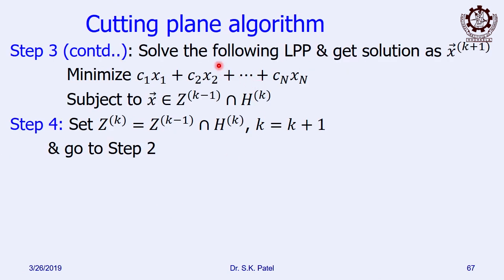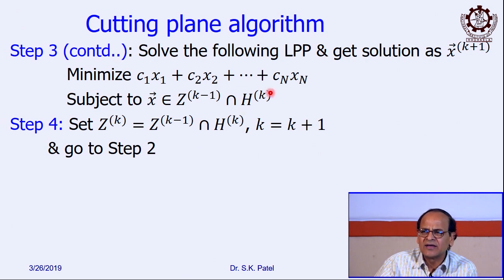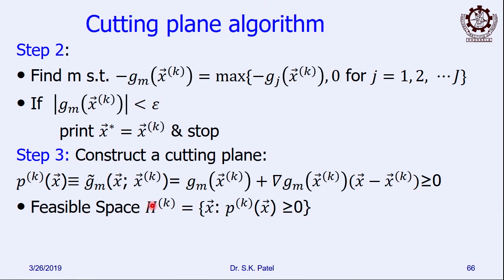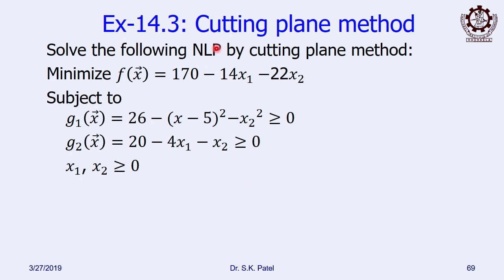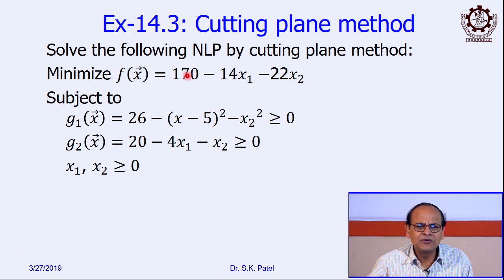In step 3, construct a cutting plane P. The cutting plane is: g_m(xk) + [del g_m(xk)]^T · (x − xk) ≥ 0. This linearizes the maximally violated constraint at the current point and forms a new constraint. The feasible half-space hk is the set of points satisfying this plane. Then solve the new LPP: minimize the same objective function, subject to x belonging to z_{k-1} ∩ hk. The intersection of the previous search space and hk gives the new reduced search space zk. Set k = k+1, go back to step 2, and repeat — the search space gets cut and reduced at each iteration.